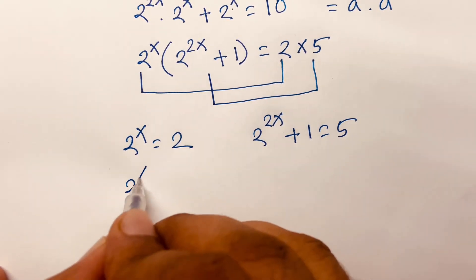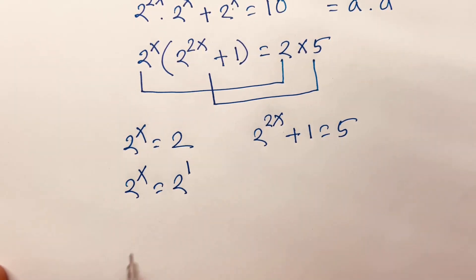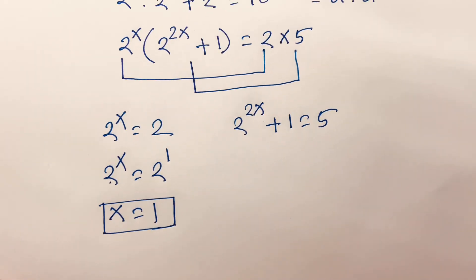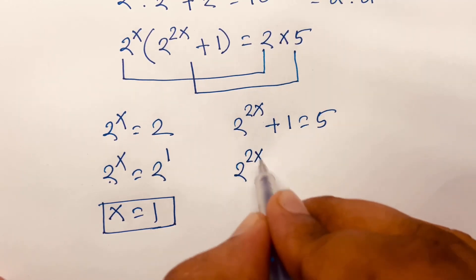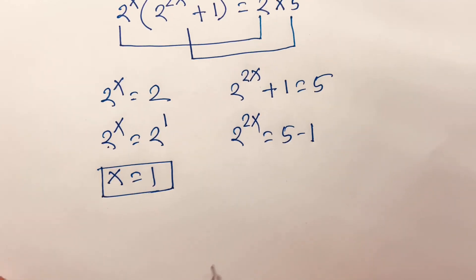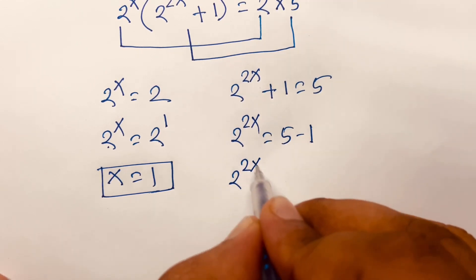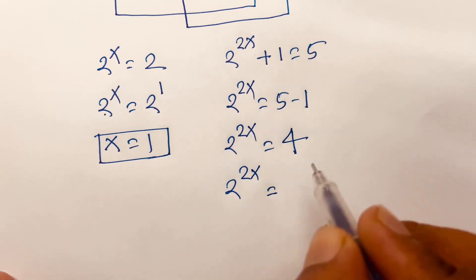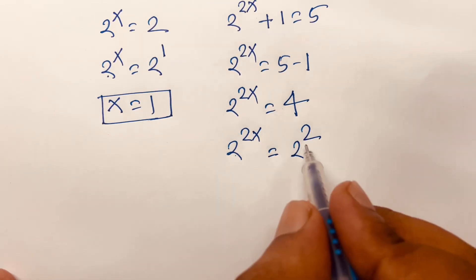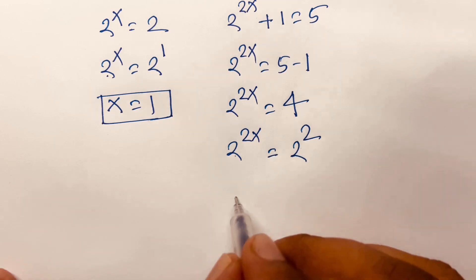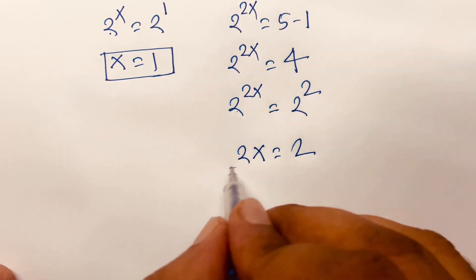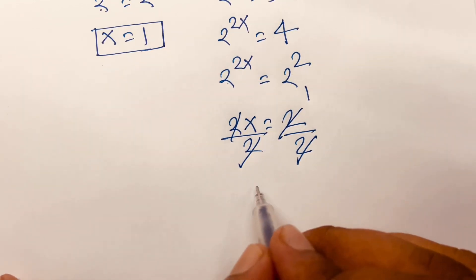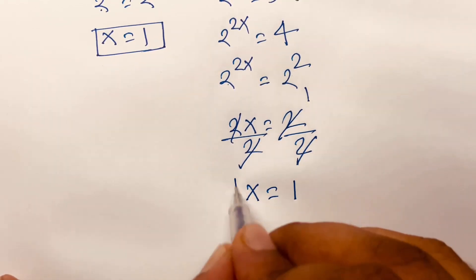I can say 2 to the power x equals 2 to the power 1. Since the base is the same, the exponents are equal. So 2x equals 2, and dividing both sides by 2, we get x equals 1.